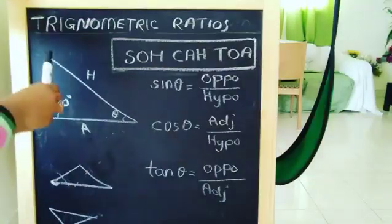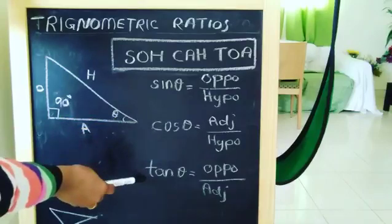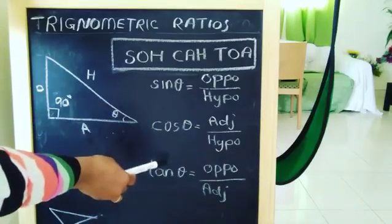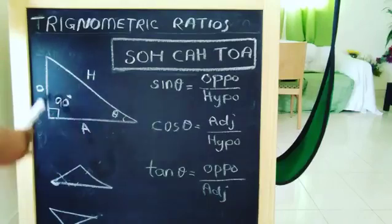Hi students. Three important trigonometric ratios are sin theta, cos theta, and tan theta. These are used to find the unknown side or unknown angle of a right angle triangle.